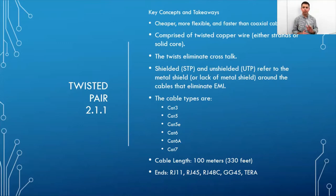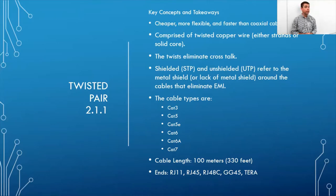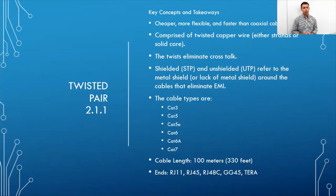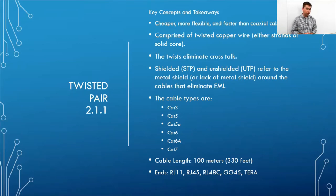Eventually twisted pair may give way to fiber as costs equalize. Twisted pair is still easier to pull and less prone to breakage, but it's limited to 100 meters (about 330 feet). It uses connectors like RJ45 for Ethernet, RJ48c, GG45, and TERA connections. The most common in use today is the RJ45.